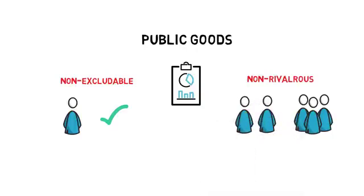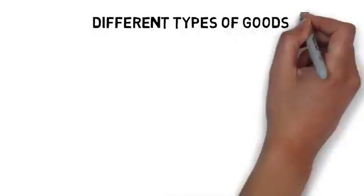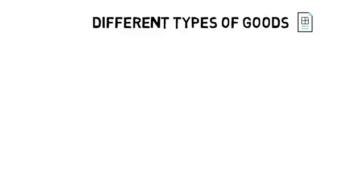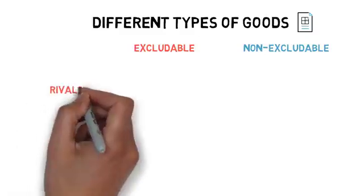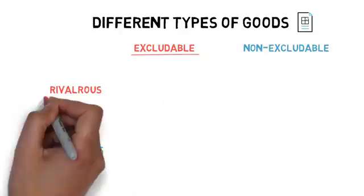To illustrate the difference between public goods and other goods such as common, private or club goods, let's have a look at a few examples. All goods can be classified by their excludability and by their rivalry. So let's start with excludable and rivalrous goods.